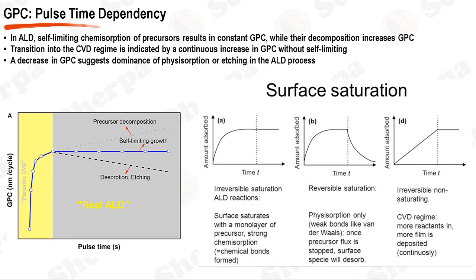Atomic layer deposition is a process used to create thin films of materials on a substrate with extreme precision. It works by exposing the substrate surface to alternate gaseous species, typically referred to as precursors or reactants, in a series of sequential, non-overlapping pulses. The key concept when optimizing an ALD process is the growth per cycle, which is used to determine the completion of the surface chemical reaction. The GPC is influenced by multiple factors, such as the dosage of the precursor, the purge time, and the oxidation steps.